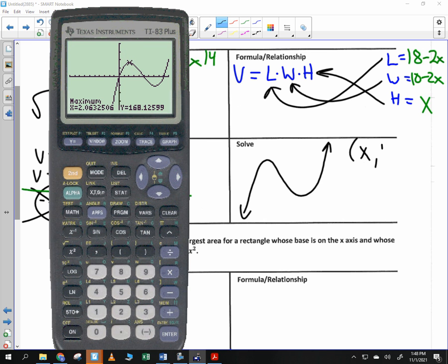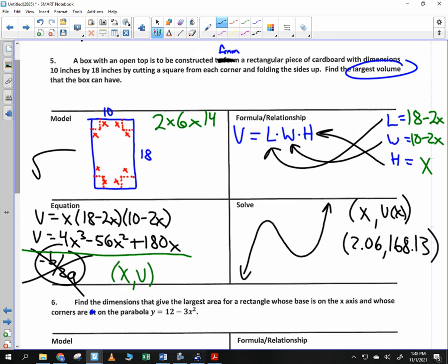And it gives me the following. Remember, I have an X value, and I have a V of X value, or volume value. And I get 2. And I get 2.06, and I get 168.13. Can somebody tell me, and I'll come around and help you, what the heck does 2.06 mean? That's what you cut, right? That's how much you cut. 2.06 by 2.06. What does 168.13 represent? The volume. What is the question asking for? It says, find the largest volume. 168.13 inches cubed. That's our answer. It does not ask for the dimensions. It asks for the largest volume.